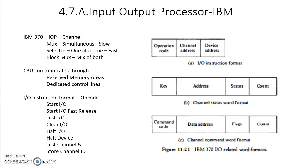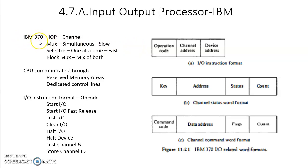Hi students. In the previous topic we had discussed about direct memory access, where an input-output processor monitors the data transfer between memory and I/O devices. In this topic we are going to look at the input-output processor itself. In our textbook, Maurice Mano discusses two I/O processors: one is IBM 370, made by IBM, and the other one is Intel 8089. Let us start with IBM 370.